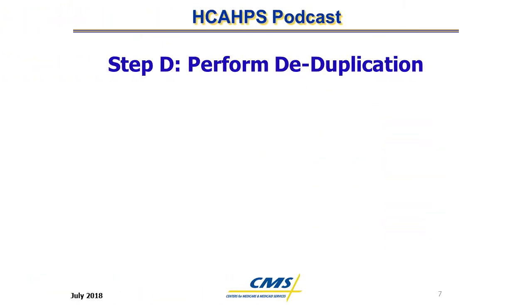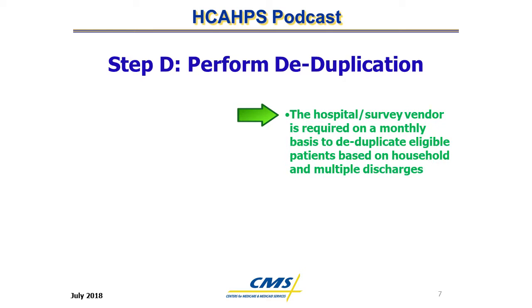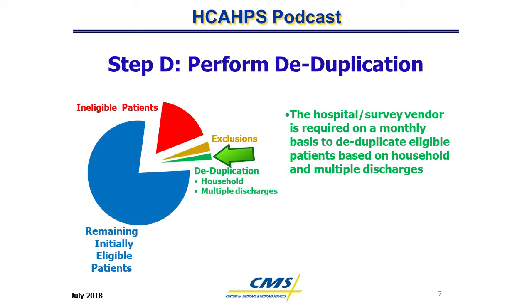Step D: Perform Deduplication. In order to reduce respondent burden, the remaining initially eligible patients must be reviewed to perform deduplication based on household and multiple discharges within the same calendar month. The green slice of the circle represents the patients who are removed due to deduplication.